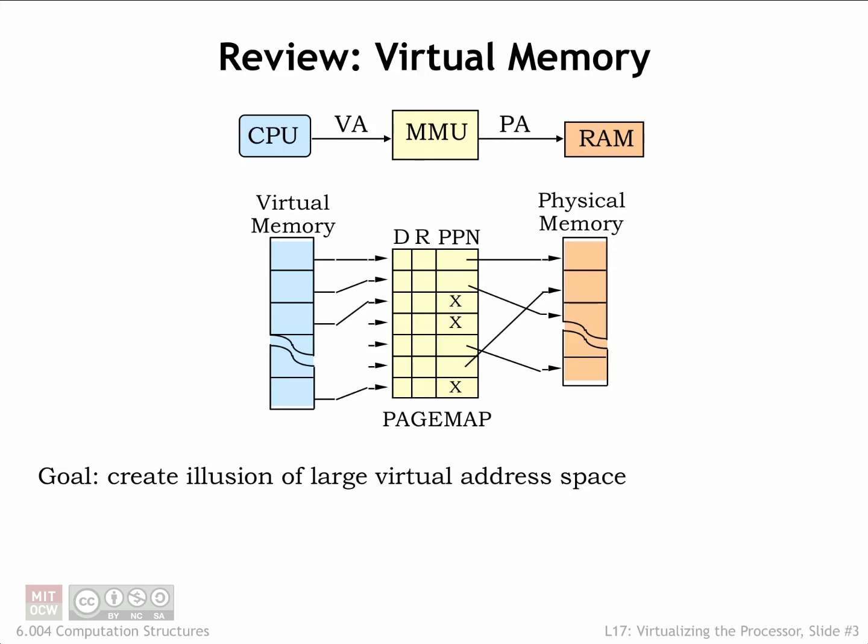In the last lecture, we introduced the notion of virtual memory and added a memory management unit, MMU, to translate the virtual addresses generated by the CPU to the physical addresses sent to main memory. This gave us the ability to share physical memory between many running programs while still giving each program the illusion of having its own large address space.